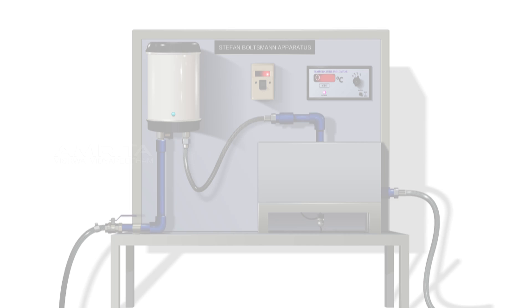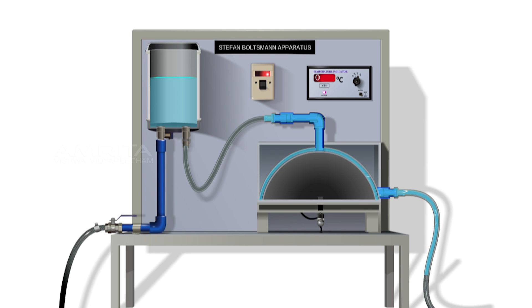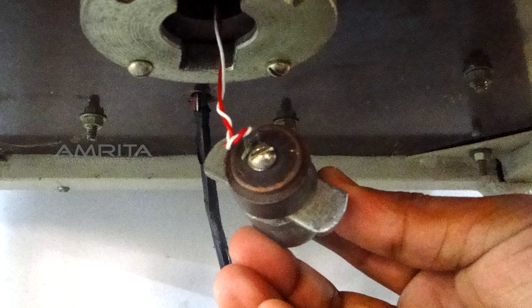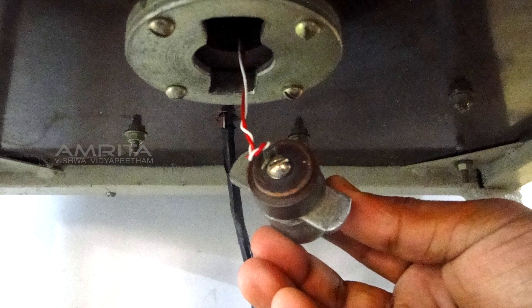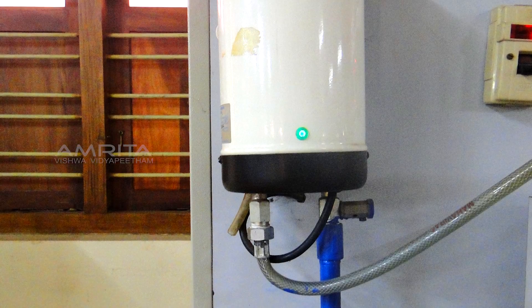Apparatus: A metallic hemisphere with a provision for water flow through its annulus, a black body that can be connected at the bottom of this metallic hemisphere, temperature indicators, and a heater.